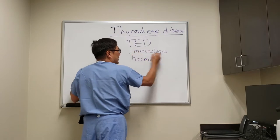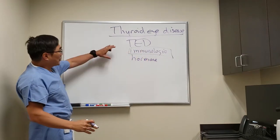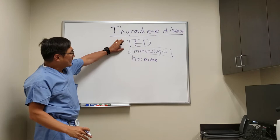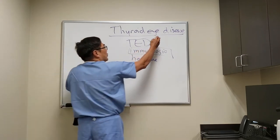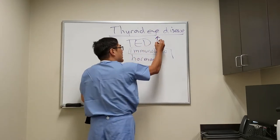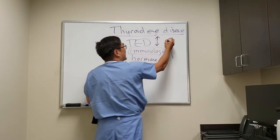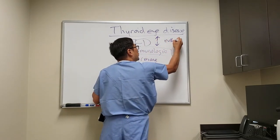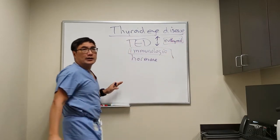It is an immunologic problem, and that is super important, because your thyroid eye disease can occur with either hyperthyroid — too high — which is Graves' disease, or it can be too low — Hashimoto's thyroiditis — and then the most dangerous category is the euthyroid Graves' orbitopathy.